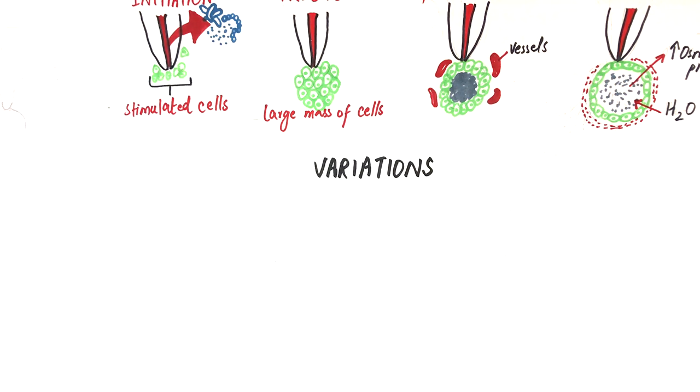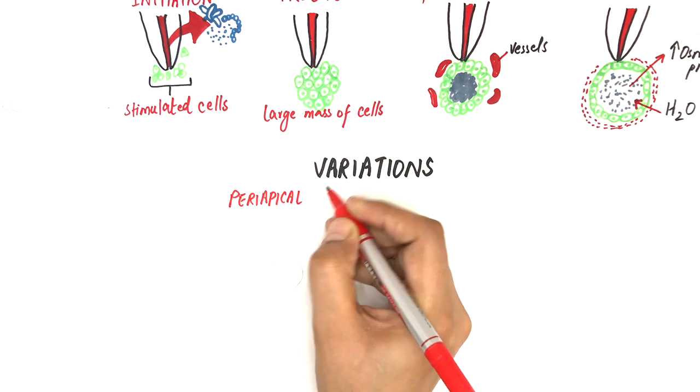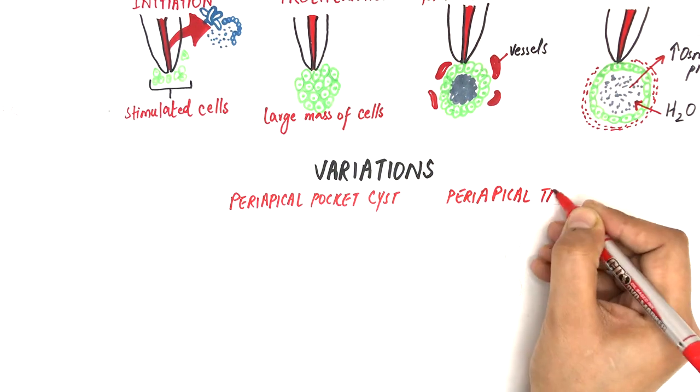Two variations of radicular or periapical cyst are known so far. These are the periapical pocket cysts and periapical true cysts.